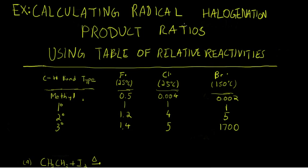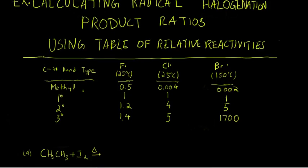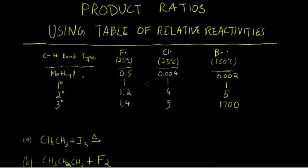I know that title is quite the mouthful, but it does illustrate what we're going to be doing in this video. So here's a table of relative reactivities of each of the carbon-hydrogen bond types with each of the halogen radicals. And I've excluded iodine because it doesn't react and doesn't undergo radical halogenation with any of the alkane CH bonds.